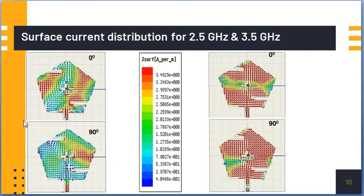It is concluded that both the resonant bands 2.5 GHz as well as 3.5 GHz are generating or exhibiting right-hand circular polarization.